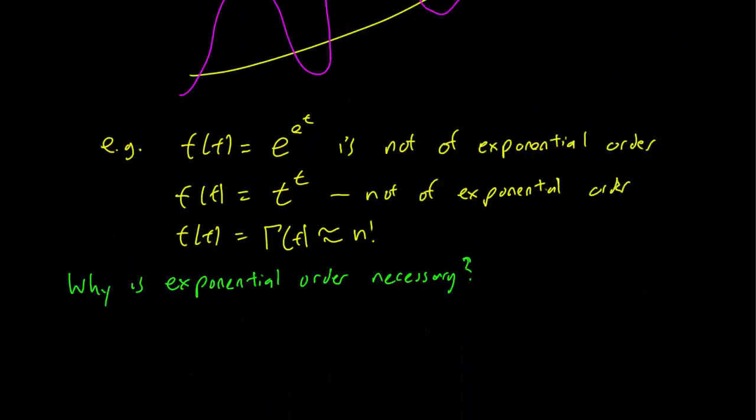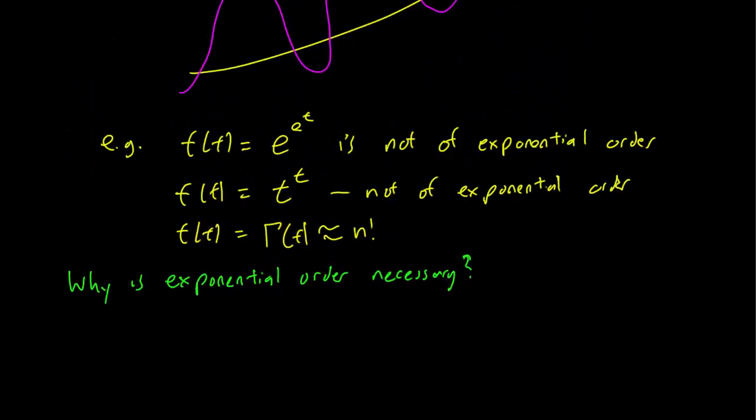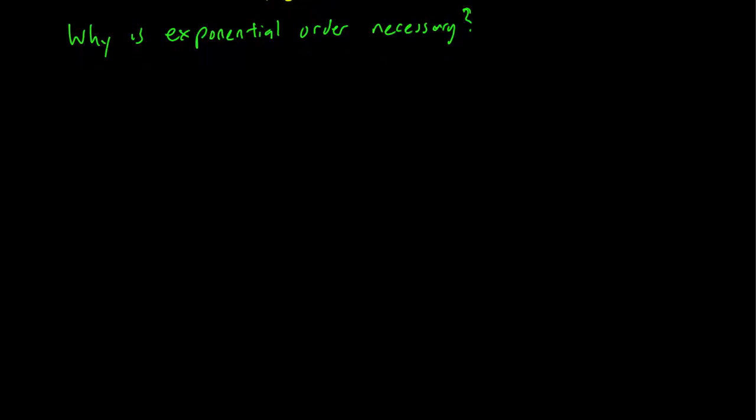So let's discuss a bit why exponential order is necessary. And we can do that by calculating the Laplace transform. So F(s) is equal to the Laplace transform of F(t). And by the definition, this is going to be equal to the integral from 0 to infinity of e^(-st) F(t) dt. So the whole point and the entire thing we're worried about is that we need this integral to exist. In particular, we needed this integral to not go to infinity.